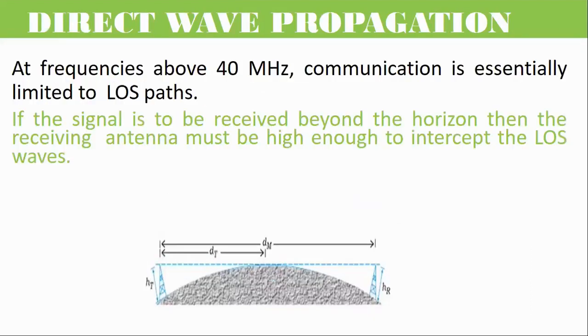At frequencies above 40 MHz, communication is essentially limited to line-of-sight paths. At these frequencies, the antennas are relatively smaller and can be placed at heights of many wavelengths above the ground.